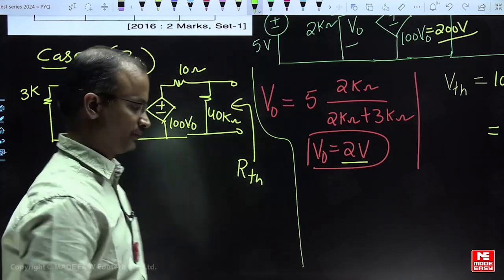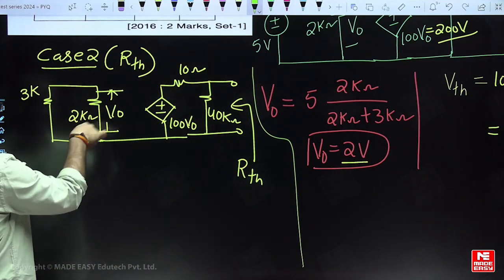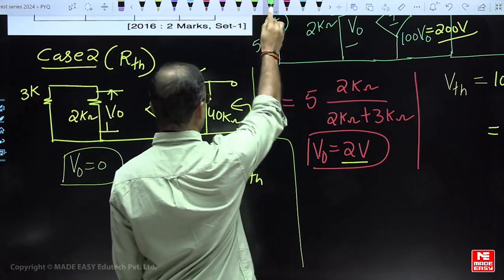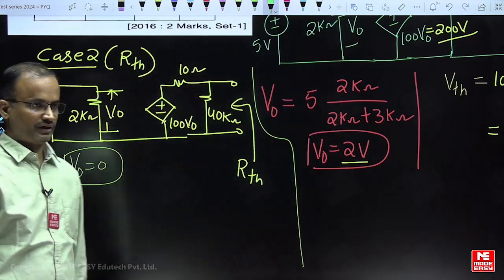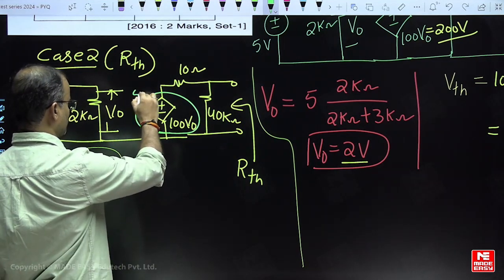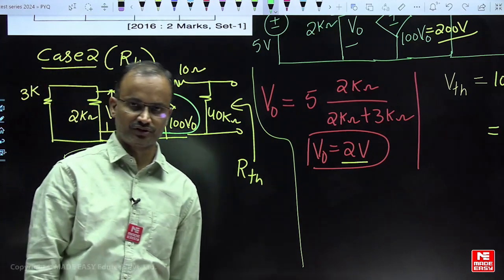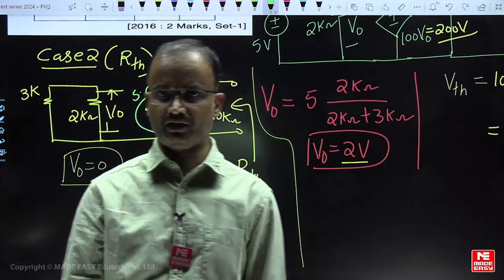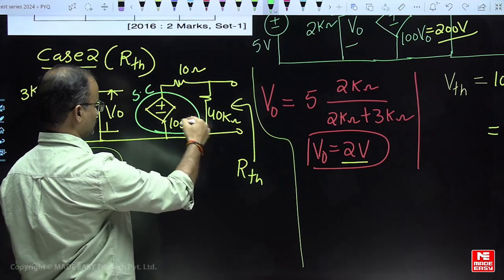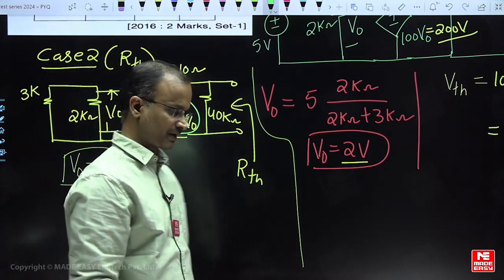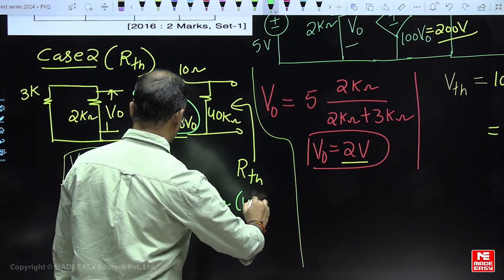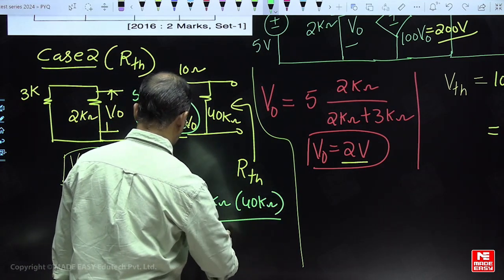Now let us simplify further. For this example, no current is circulating, so V_naught is equal to 0. If V_naught equals 0, then the dependent source value is also equal to 0. Voltage equal to 0 means we indicate it by a short circuit. The equivalent resistance is found from these two points. With that part short-circuited, the 10 kΩ and 40 kΩ are connected in parallel.